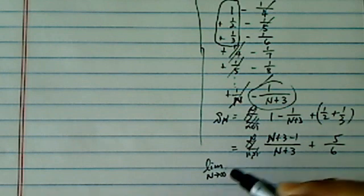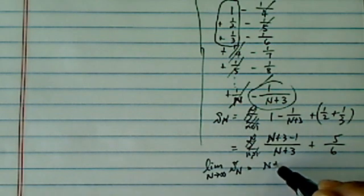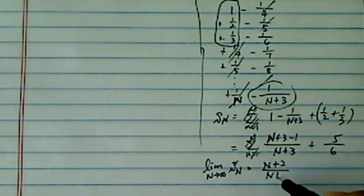Now we're going to take limit as big n goes to infinity of this partial sum, then we have literally n plus 2 over n plus 3 plus 5 over 6.